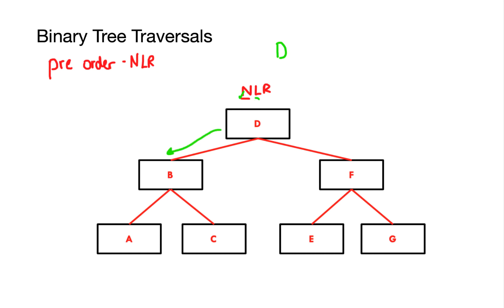The next step is to look at the left subtree. I move down to the left subtree and start the rule again — this is vitally important, it's the same rule you follow in every traversal. I take the node and write down B. Once completed I move to the left subtree again and write down node A.